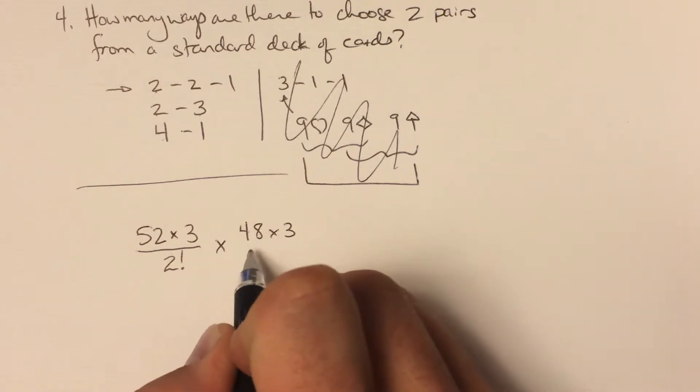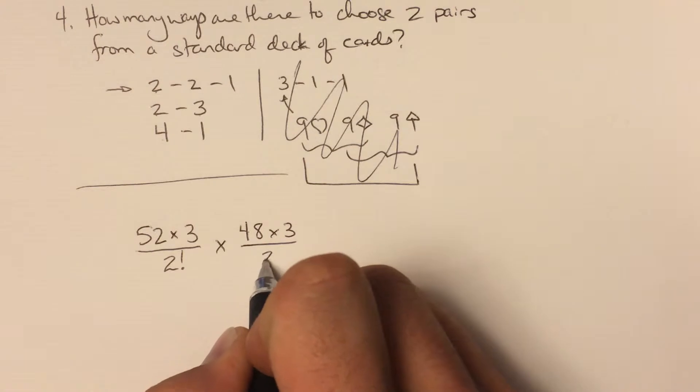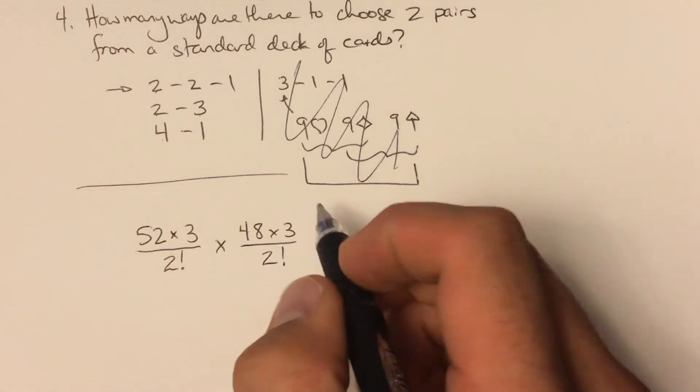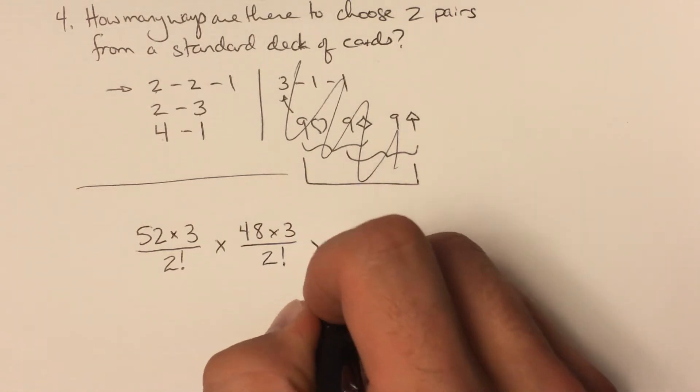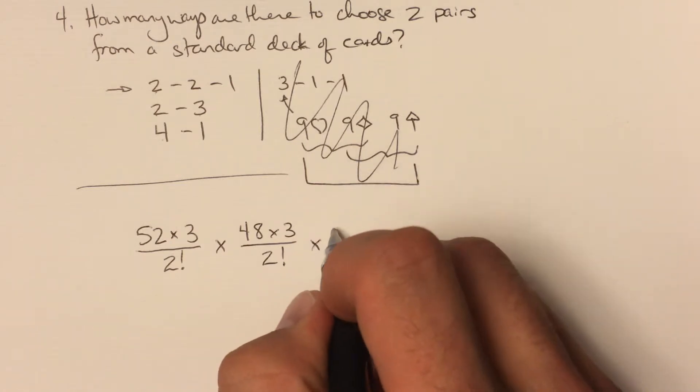There are three cards with the same value as the second choice, I suppose third choice. And again, we could have chosen those in any order that we like.